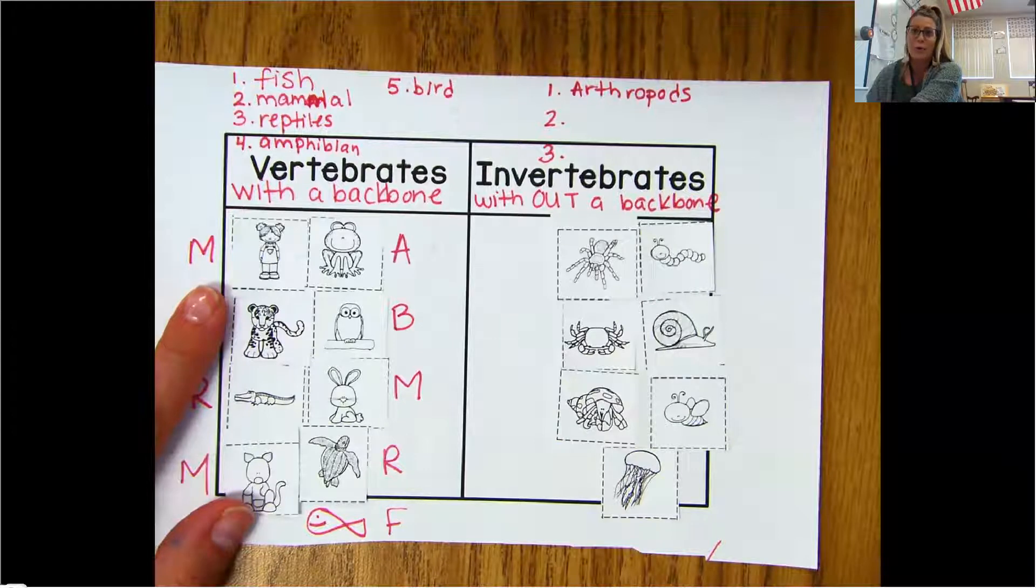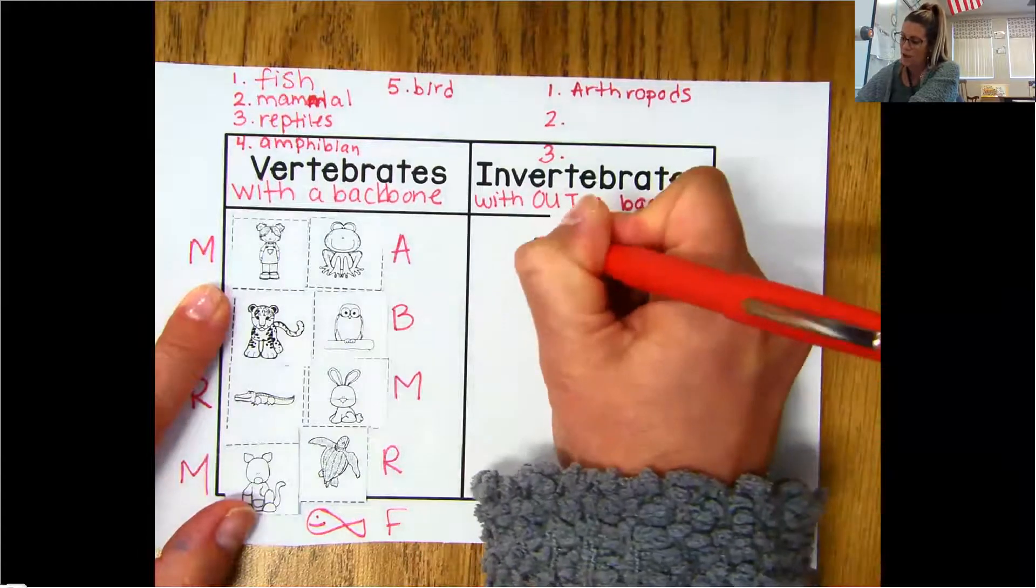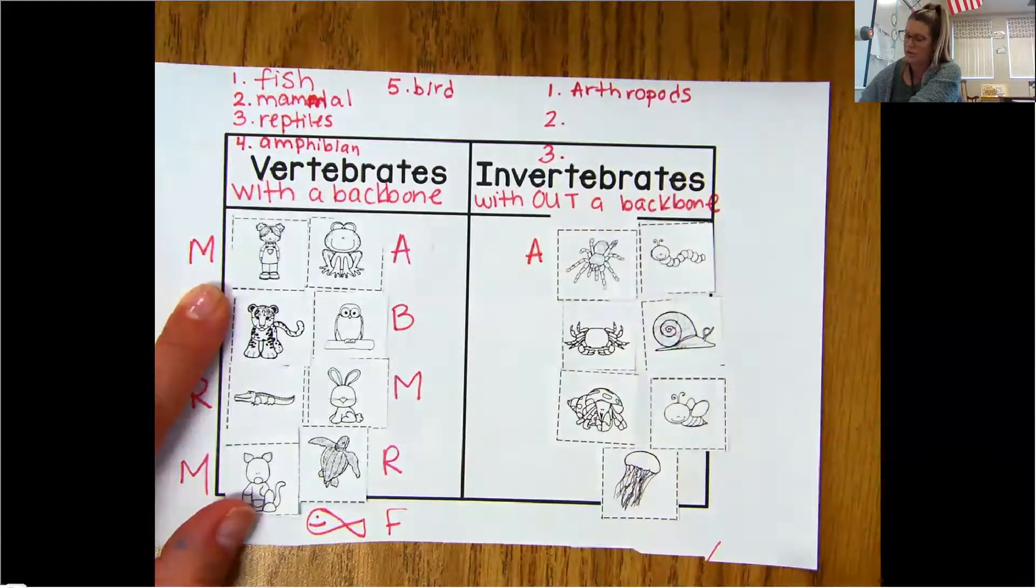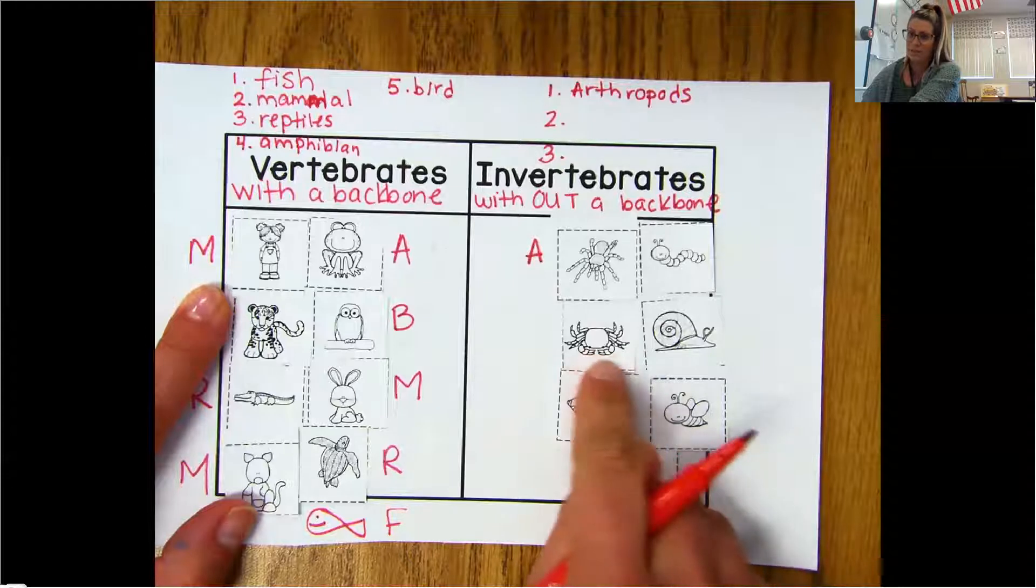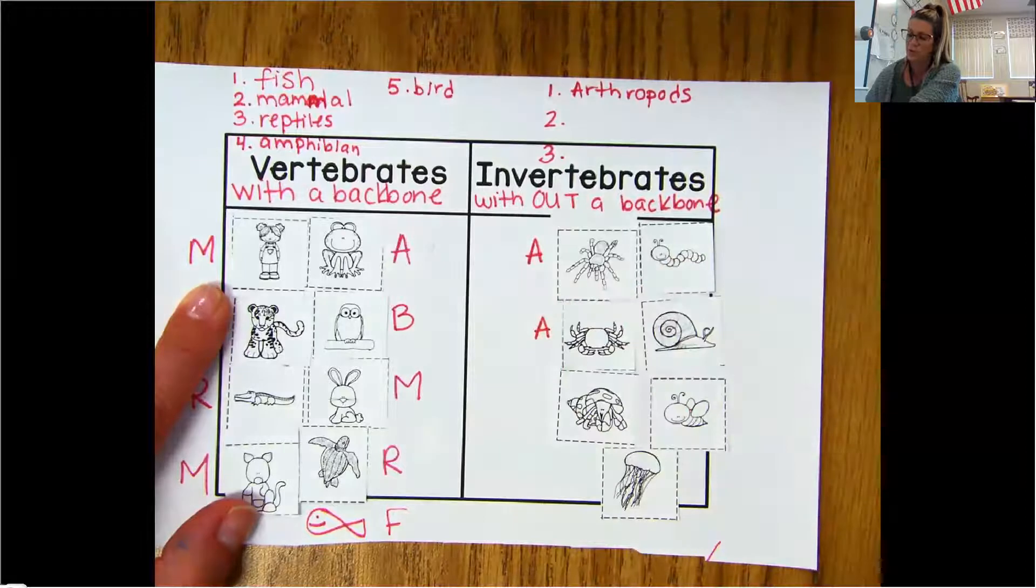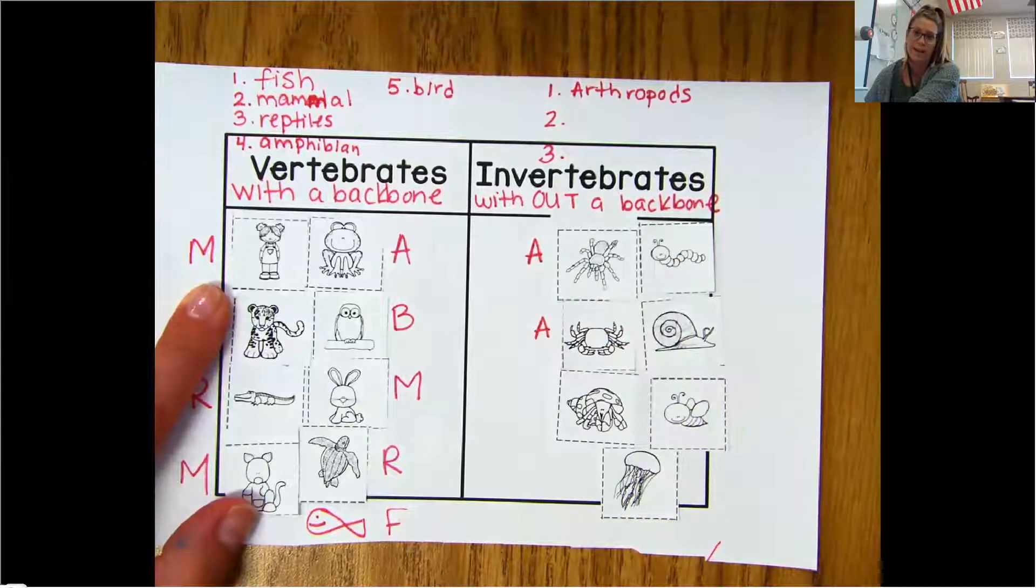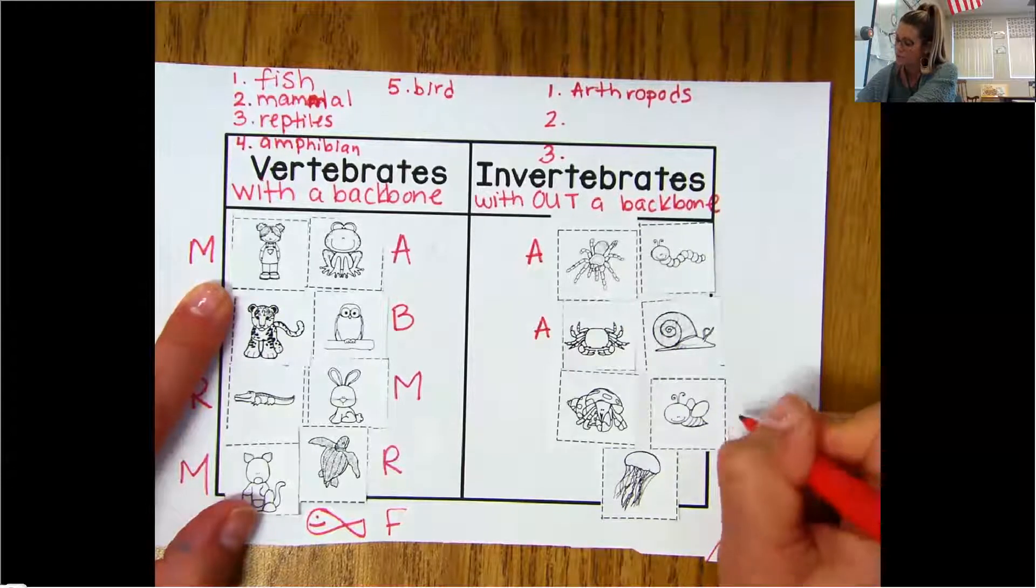Well, they said arachnids. Arachnids are spiders. So, an arachnid or a spider is an arthropod. What other one? There's two more. The crab or the crustacean is also considered an arthropod. And insects, remember, are considered arthropods. So, the bee.